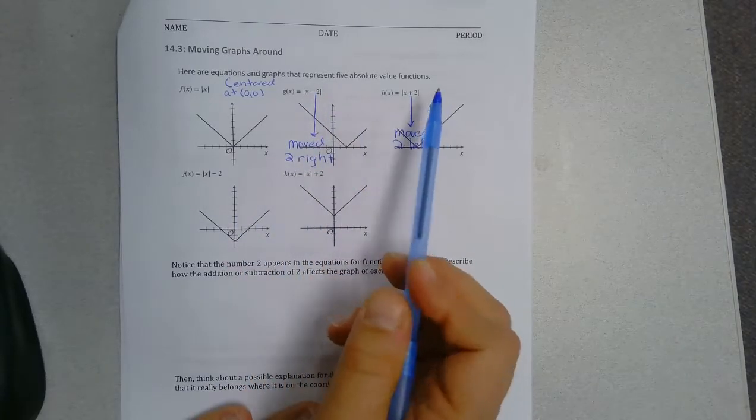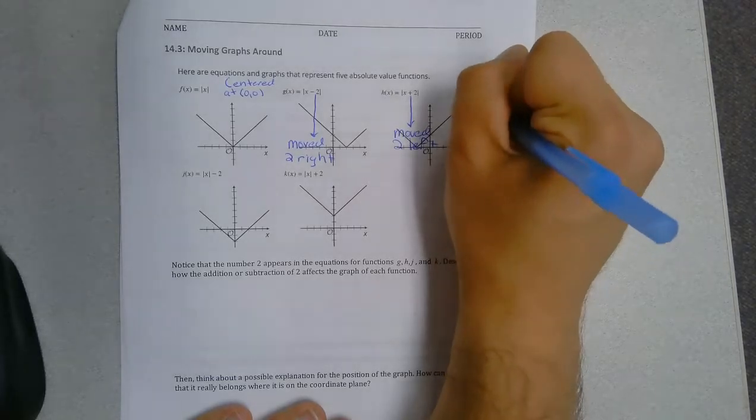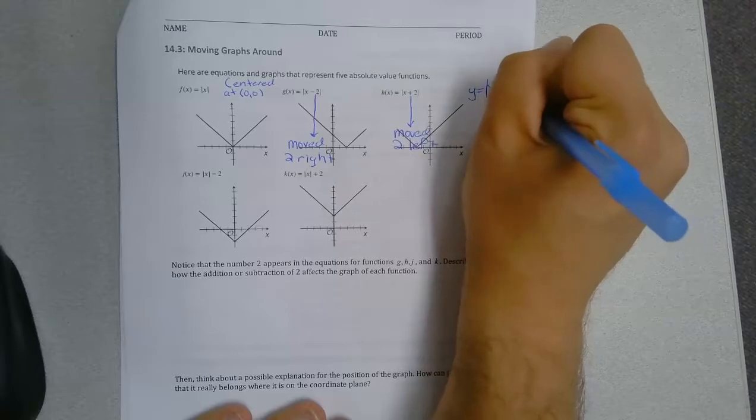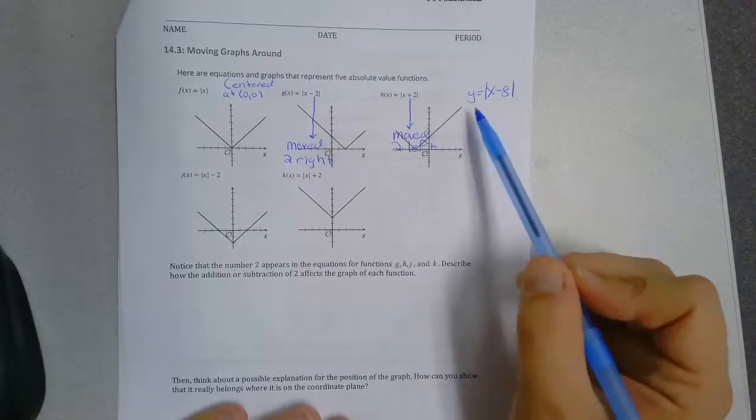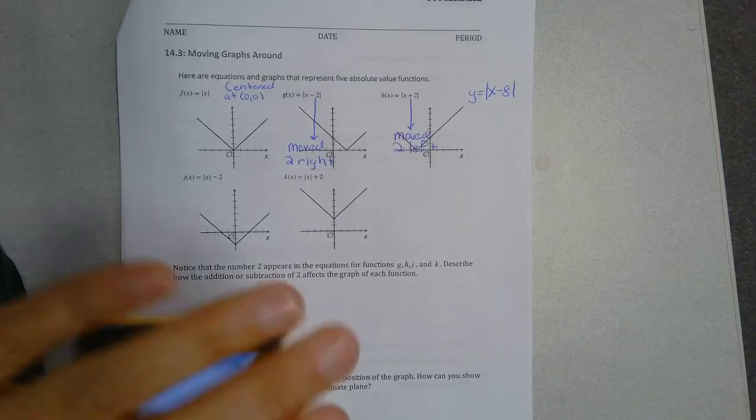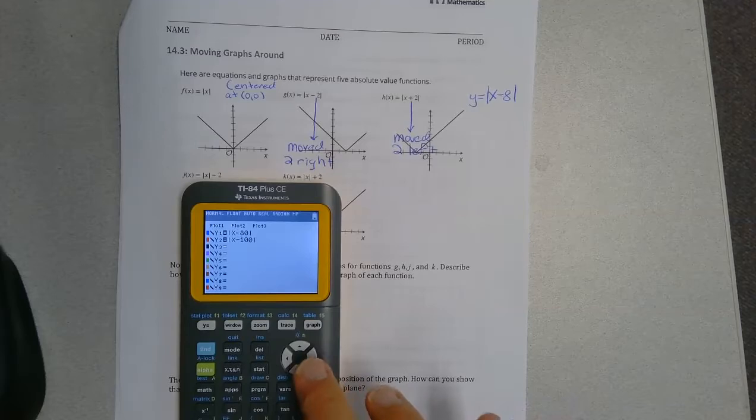So what I might ask you guys is, what if I did the function y equals the absolute value of x minus 8? Where is that going to be centered? So I'm going to go ahead and graph that. Y equals the absolute value of x minus 8.